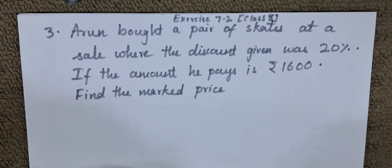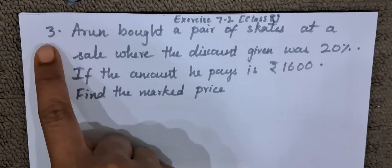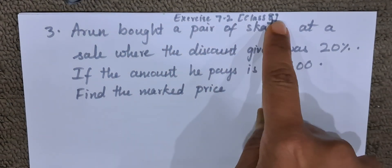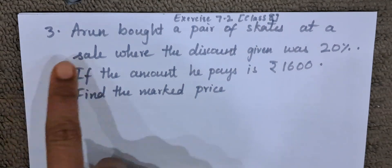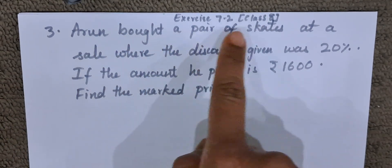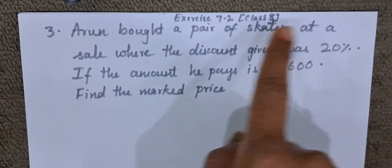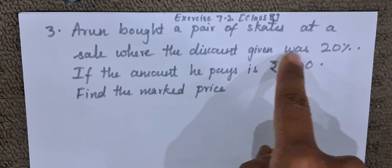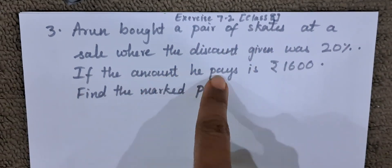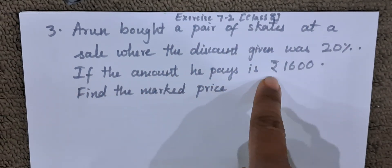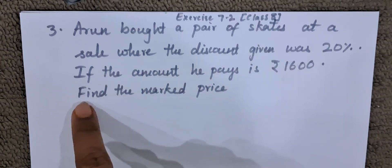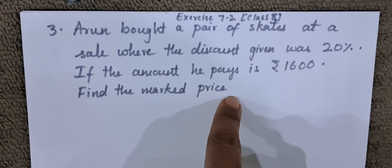Hello everyone, today we are going to do question number 3 of exercise 7.2 class 8. The question goes like this: Arun bought a pair of skates at a sale where the discount given was 20%. If the amount he pays is Rs. 1600, find the marked price.